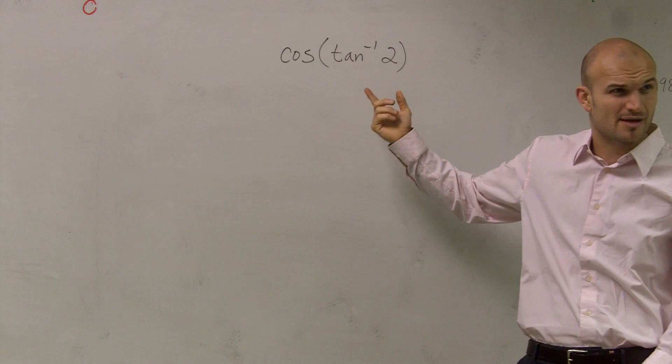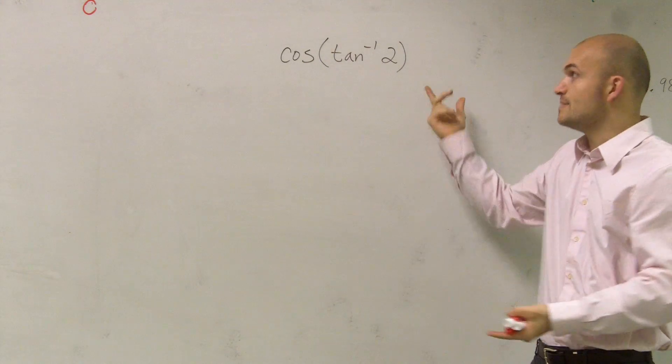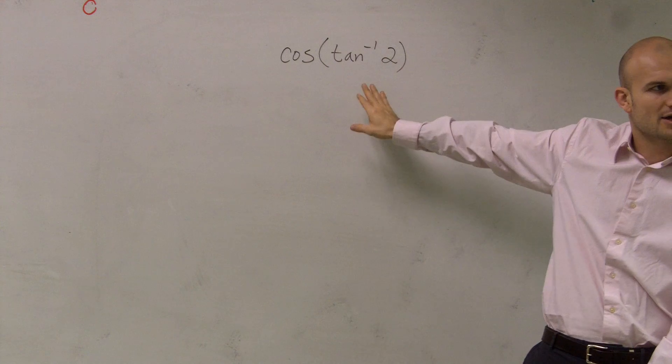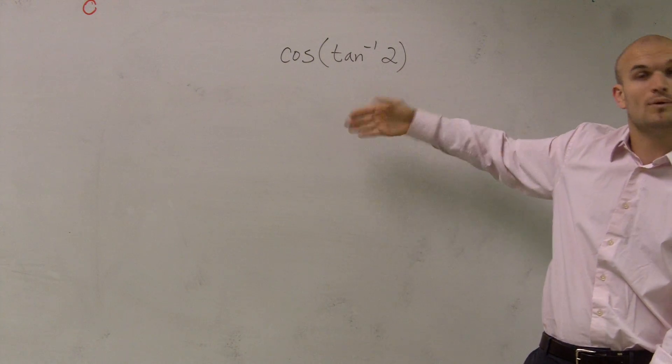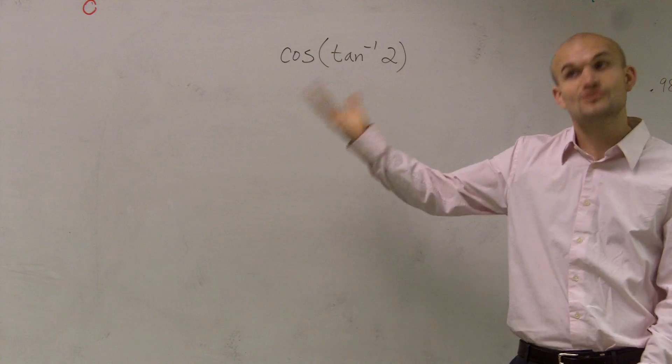Did everybody understand what I meant by that? I had radical 2 over 2 divided by radical 2 over 2 and gave me 1. Well, here, I don't have my points on the unit circle that can give me 2. So, therefore, when I don't have a point that's not on the unit circle, I have to use a triangle.